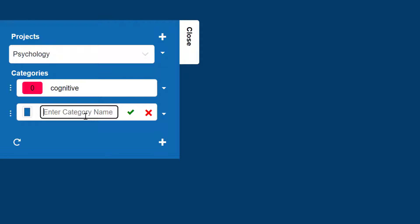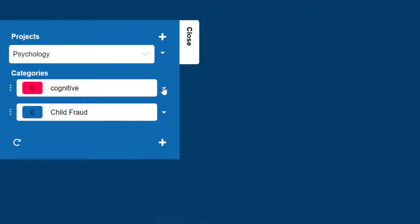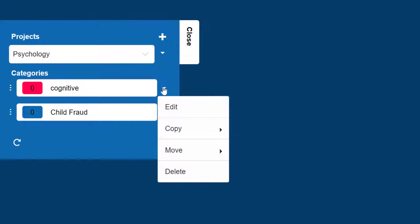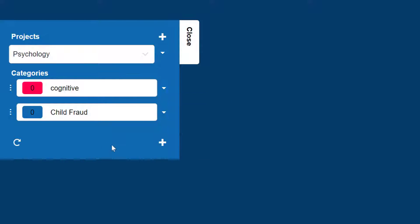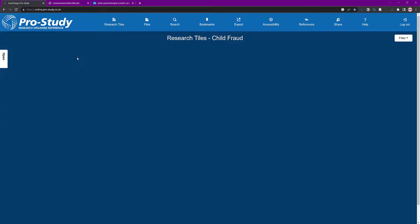Select Plus and let's do another one quickly — let's put in 'Sigmund Freud'. So say you're doing children and Freud, for example. On the right you've got an option to re-edit it, copy it, move it, or delete it, because you might want to move it into another project. I can close that — I'm good to go. I'll come back to these options in a minute.